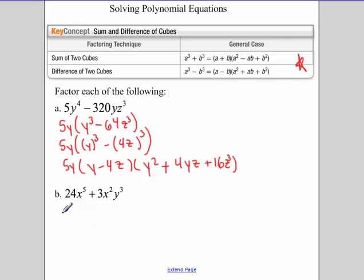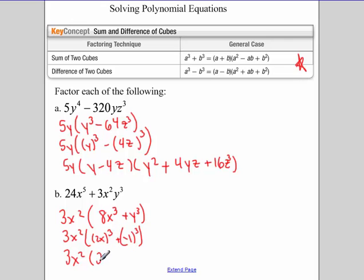So now for the next one. GCF again, 3x². So I'm left with 8x³ + y³. Now again, what I do is I rewrite it. So I rewrite it as 2x³ + y³. So then we have 3x². We have, okay, so ignore the exponents. So I just have 2x + y. And then first term squared, 4x². Product of your two terms. And then the last term squared. And so that's how you factor sum and differences of two cubes.